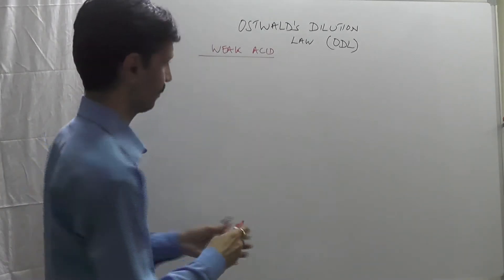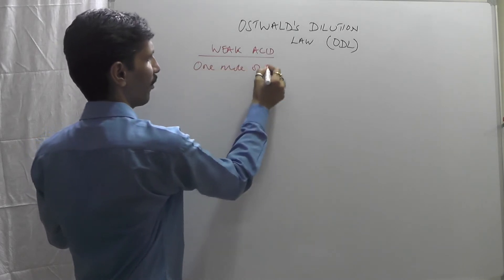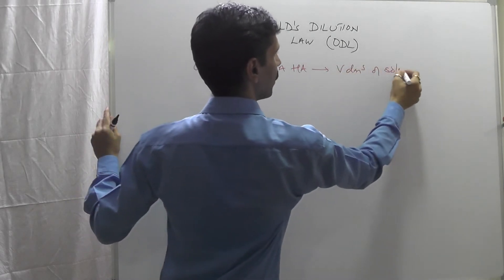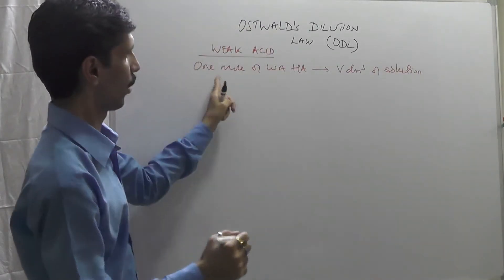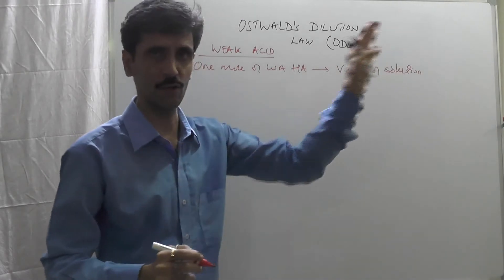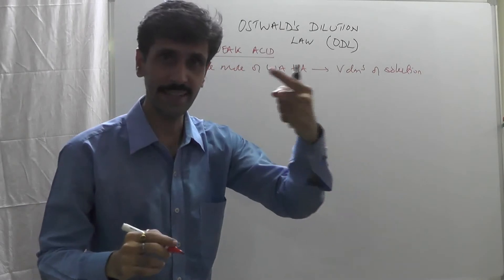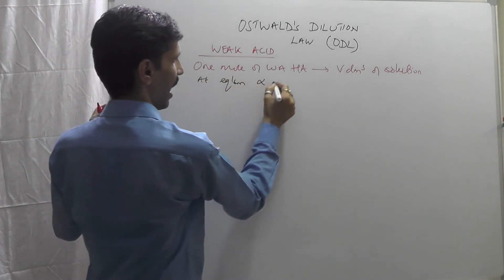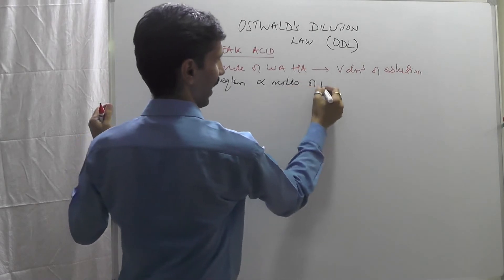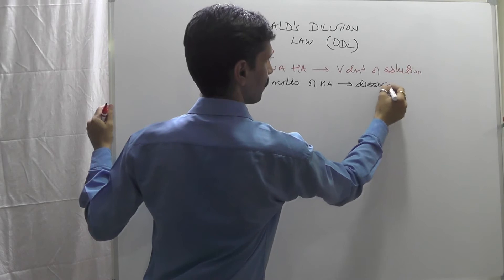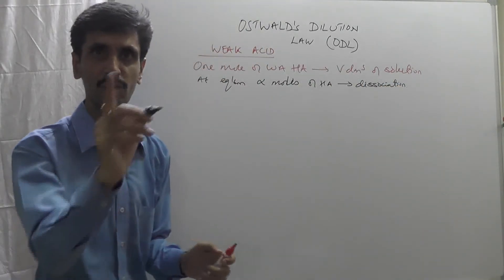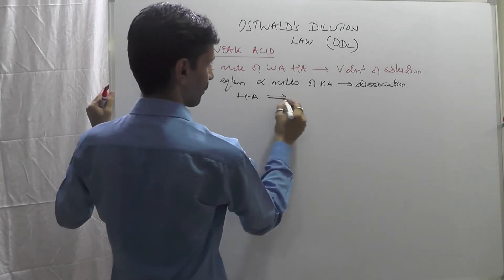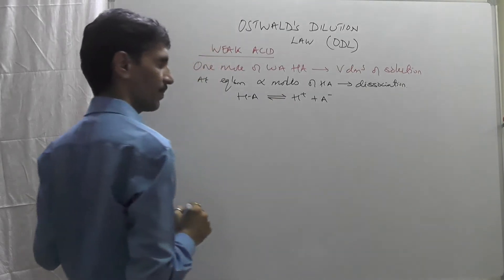Consider 1 mole of a weak acid HA in V dm³ of solution. When we talk about the degree of dissociation, at equilibrium, alpha moles of HA will undergo dissociation. The dissociation reaction is: HA ⇌ H⁺ + A⁻ (slow, reversible). Initially, moles are: HA = 1, H⁺ = 0, A⁻ = 0.